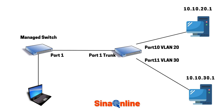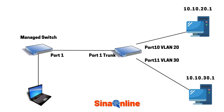This is my topology. I have two switches connecting to each other from port 1. I am connecting to the managed switch and doing configuration on it — another switch is already configured. Running 'show vlan' shows I have just one default VLAN and this VLAN ID is 1.